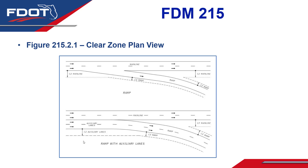And when you have auxiliary lanes, it's a similar story. The Clear Zone limit follows along parallel to the centerline of the mainline, until it encounters the Clear Zone of the ramp, which is tapering away from the mainline. Looking at the trailing end of both scenarios, the same philosophy applies in the reverse direction — the Clear Zone for the mainline follows parallel to the mainline centerline until it encounters the ramp's Clear Zone limit, which is tapering away.